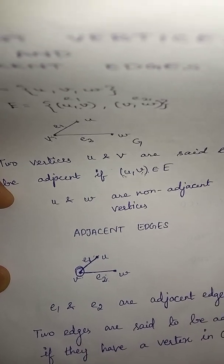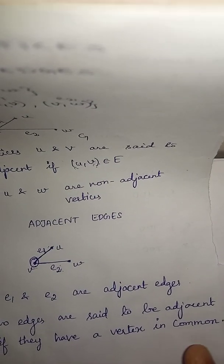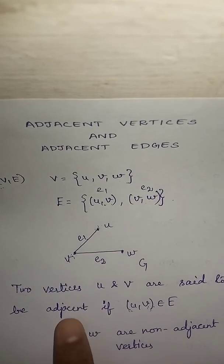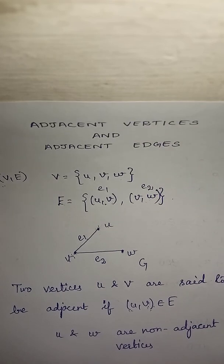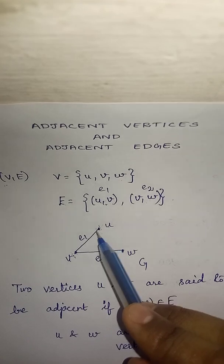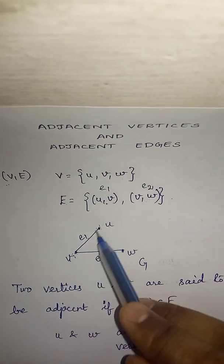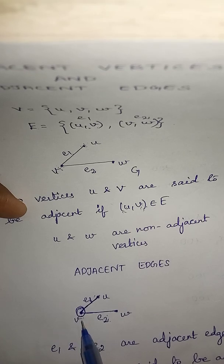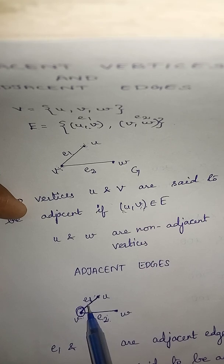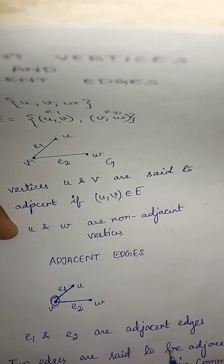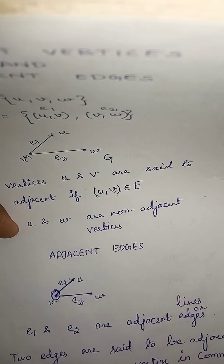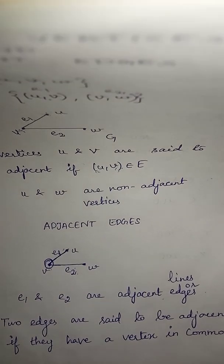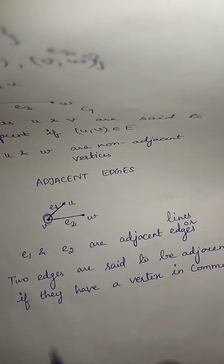So two edges are set to be adjacent if they have a vertex in common, that is a common vertex. This is the definition of adjacent edges. Two definitions are now clear — adjacent vertices and adjacent edges.